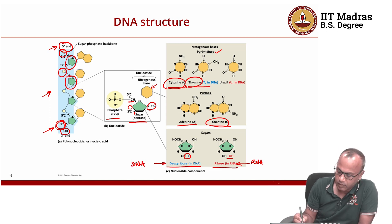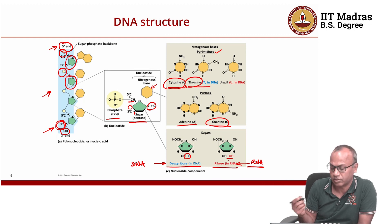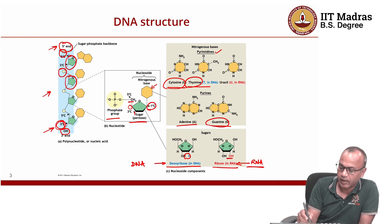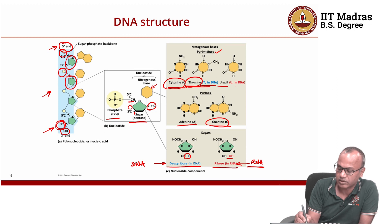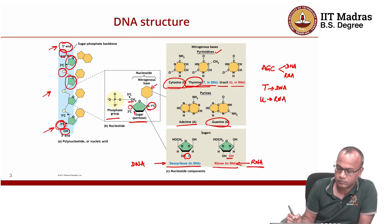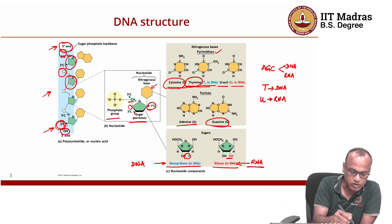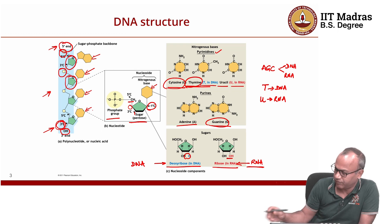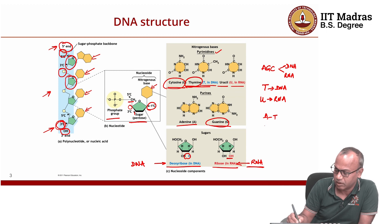Ribose sugar is found in RNA, while deoxyribose is found in DNA. This is one of the key differences between DNA and RNA. Another difference is that DNA always contains thymine (T), while RNA contains uracil (U) instead. The letters A, G, and C are common to both DNA and RNA, but T is found in DNA only, and uracil is found in RNA only.